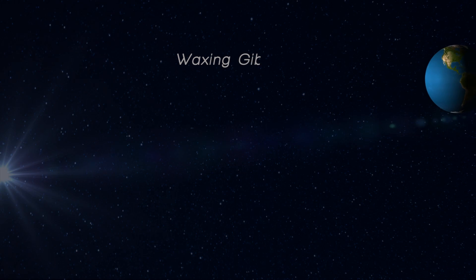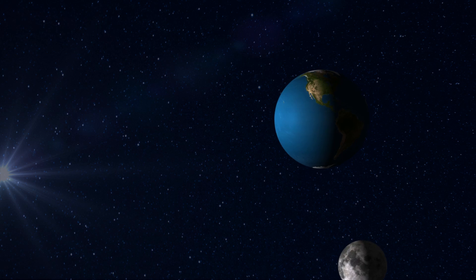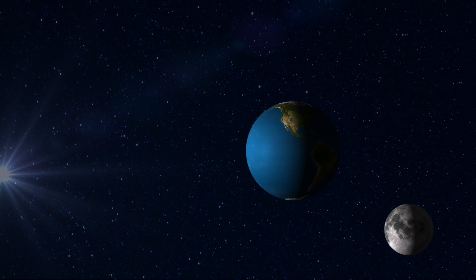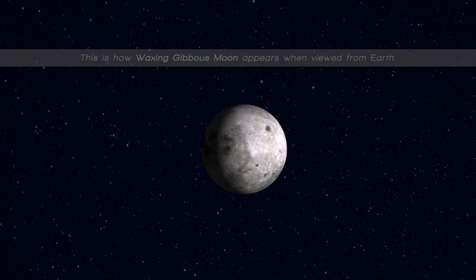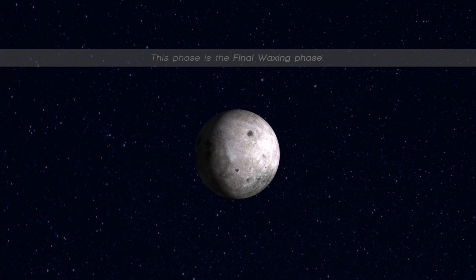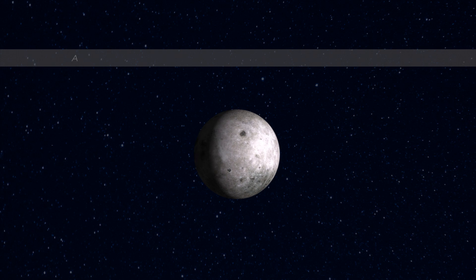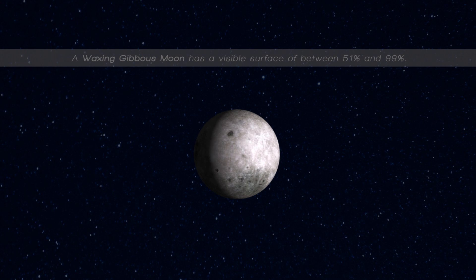Waxing gibbous, the fourth phase. This is how a waxing gibbous moon appears when viewed from earth. This phase is the final waxing phase. A waxing gibbous moon has a visible surface of between 51 and 99%.